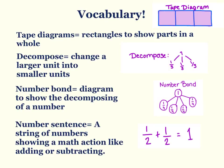Over here you can see we have our tape diagram, and this rectangle is our whole — it has three equal parts to show we have three parts in one whole. The next word is decompose, and that means to change a larger unit into smaller units. Our example is we have one, which is our larger unit, decomposed into three smaller units, or one-thirds.